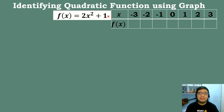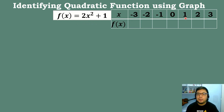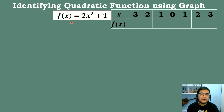Next is identifying quadratic function using the graph. We have the given equation f(x) = 2x² + 1, where the values of x are −3, −2, −1, 0, 1, 2, 3. We will solve for the value of f(x) by substituting the values of x into our equation. Let's try to solve if x = −3. What will be the value of f(x)?